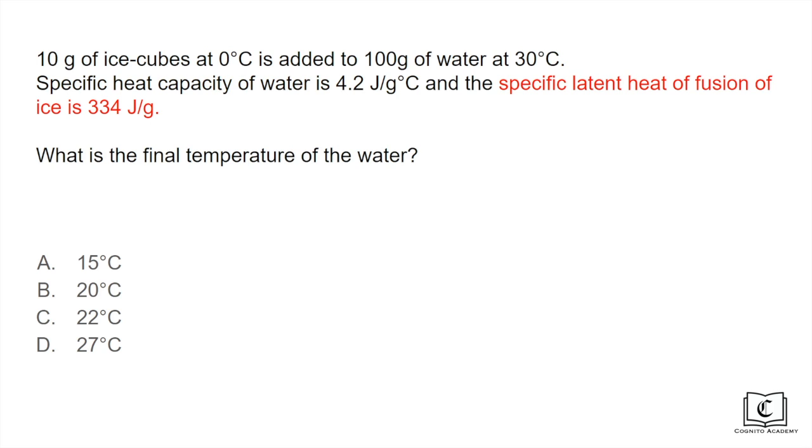And what does it mean by the specific latent heat of fusion of ice is 334 joules per gram? Well this means that in order to turn 1 gram of ice into 1 gram of water without a change in temperature we need 334 joules of heat to be added to that ice.